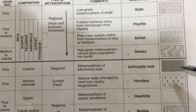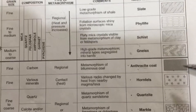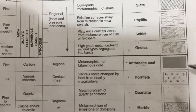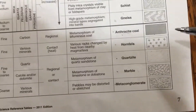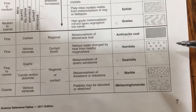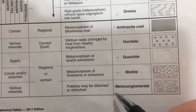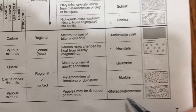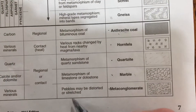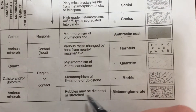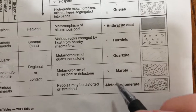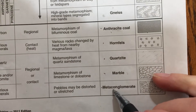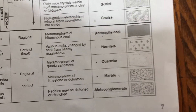It's kind of black, kind of massive — you'll see it, it's the only one that really looks like a lump of coal. What else — meta-conglomerate: the pebbles may be distorted or stretched, but the way to get this one is that you've got to know what conglomerate is, so going back to the sedimentary lab.